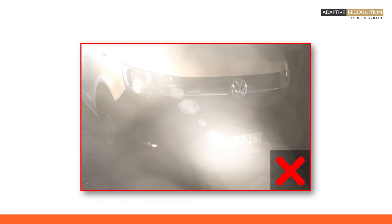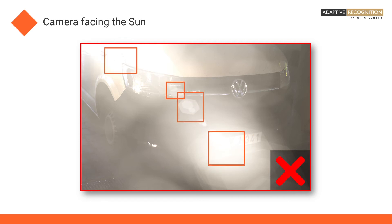This image was taken with the camera facing the sun. That causes a halo effect and makes ANPR impossible in most cases. Again, you can fix it if the camera is positioned a bit higher and you tilt down the camera more.